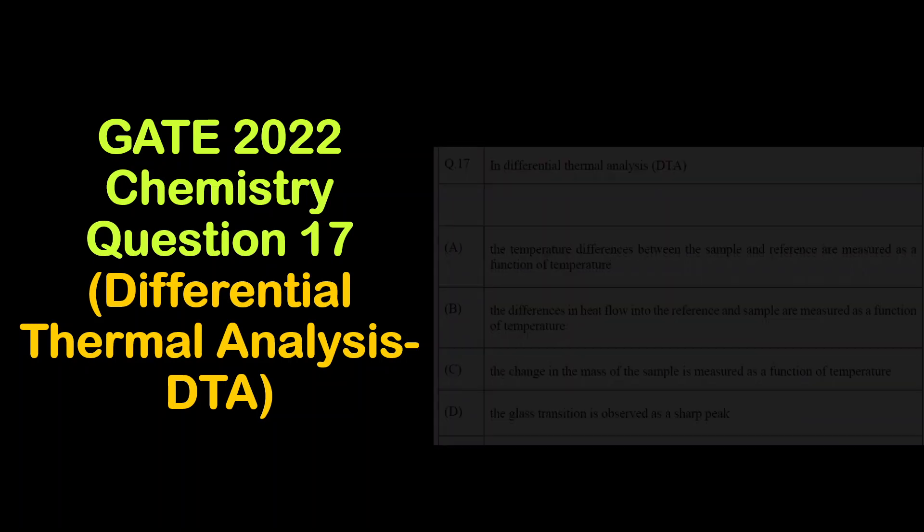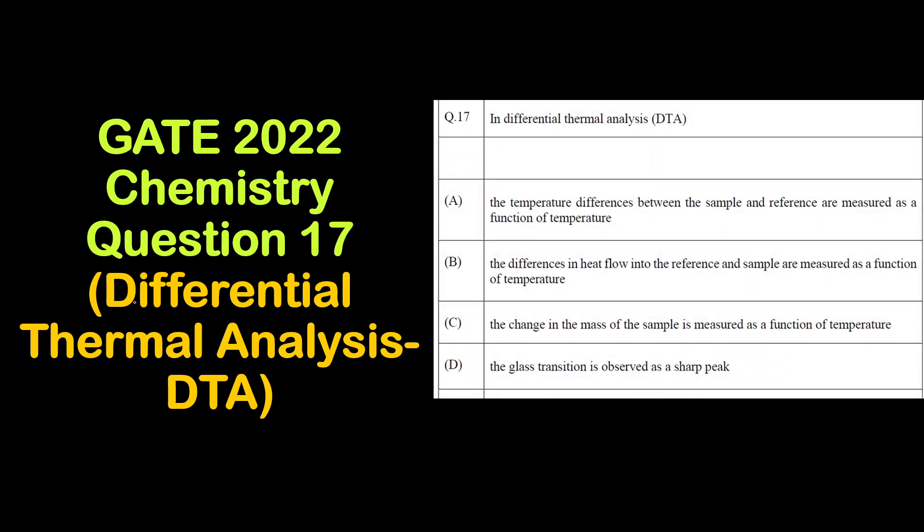Hello everyone, welcome to Chemezon Complete Chemistry. In this video, we are going to solve question 17 of the GATE 2022 chemistry paper, which is based on an analytical technique called differential thermal analysis or DTA.